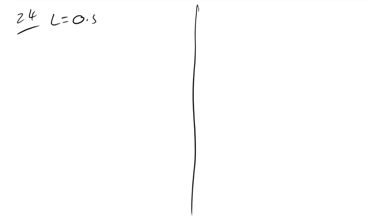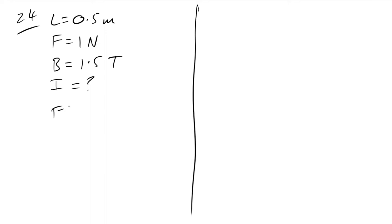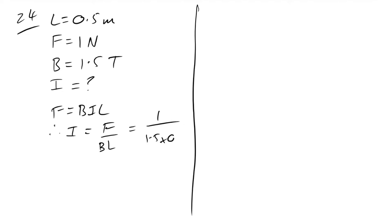Question 24: a horizontal wire of given length has a weight of 1 N and flux density 1.5 T. Using F = BIL, rearranging: I = F/(BL) = 1 / (1.5 × 0.5) = 1 / 0.75 ≈ 1.3 A.